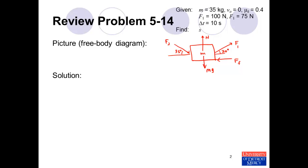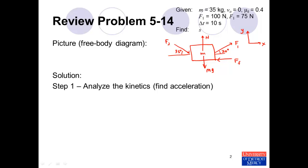Once we've identified all forces, we also define a coordinate frame. Since the block is traveling horizontally, x is horizontal and y is vertical, with right and up being positive. We'll do our solution in two steps: first, analyze the kinetics using Newton's second law F equals ma to find the acceleration of the block; second, use that acceleration to find the ensuing displacement.